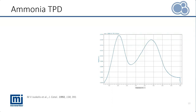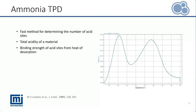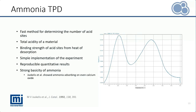Ammonia TPD has several advantages. It is a fast method for determining the number of acid sites. We can gain insights on the total acidity of a material and the binding strength of each acid site from the heat of desorption calculation. It is a relatively simple and quick experiment with repeatable quantitative results. However, like any other method, there are some precautions to take with ammonia TPD, since ammonia is a very strong base, which means it can overestimate the acidity of a material.